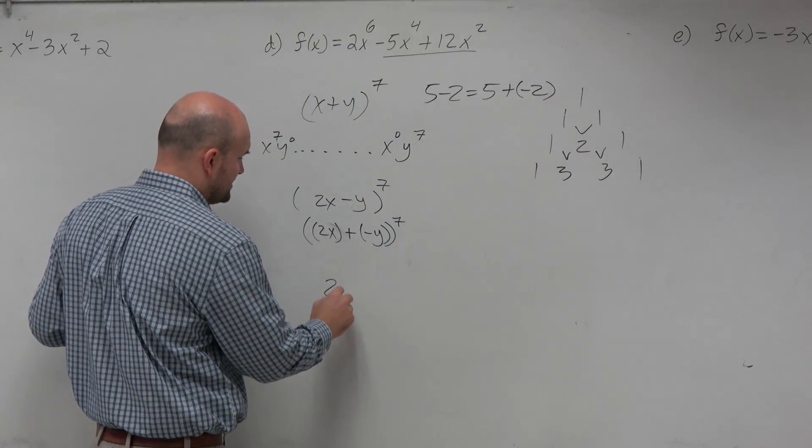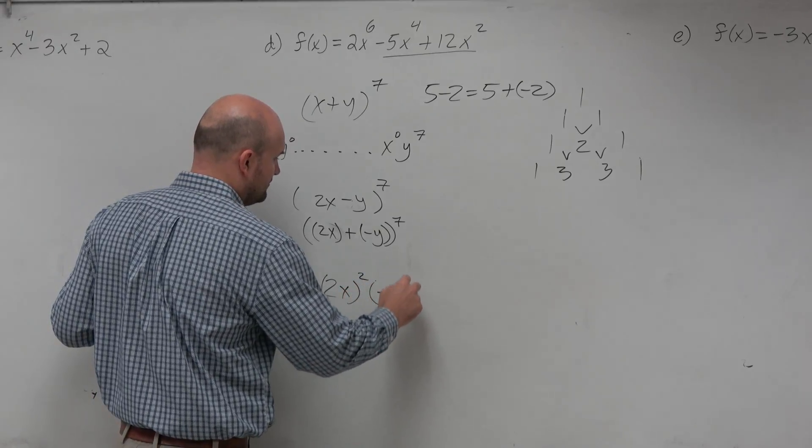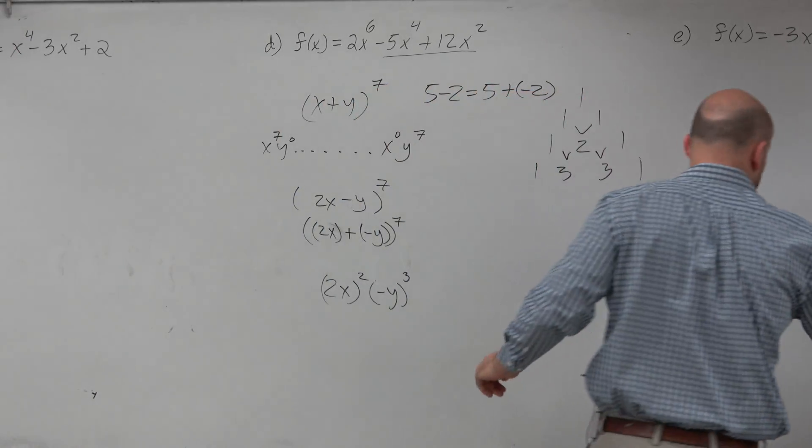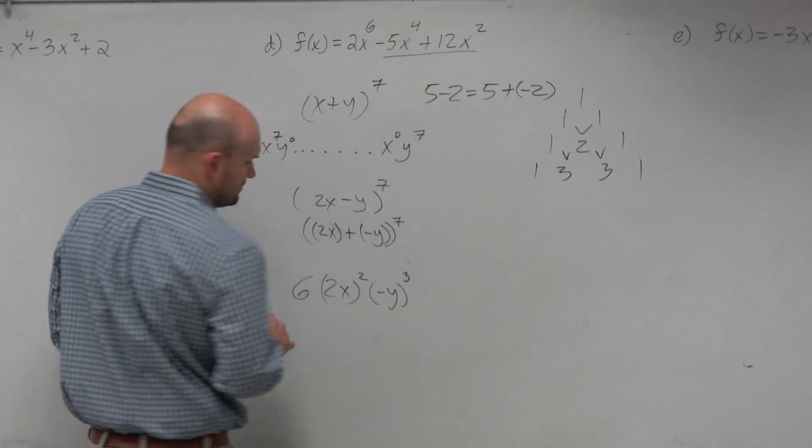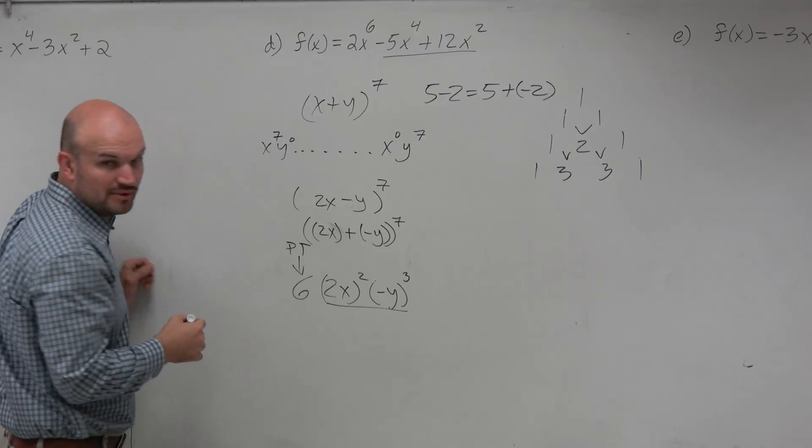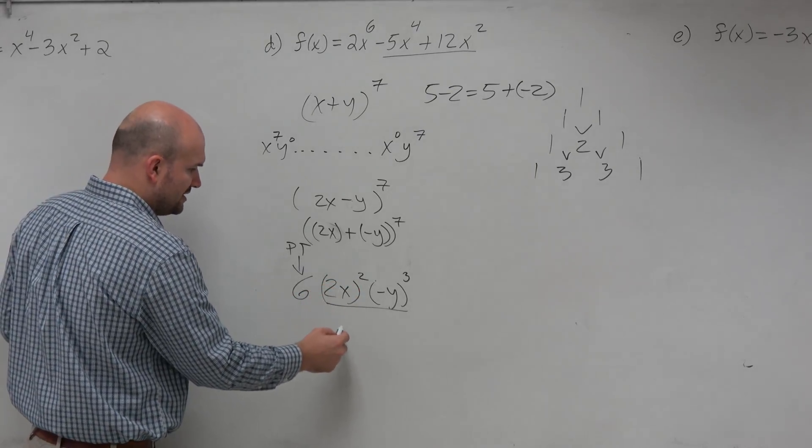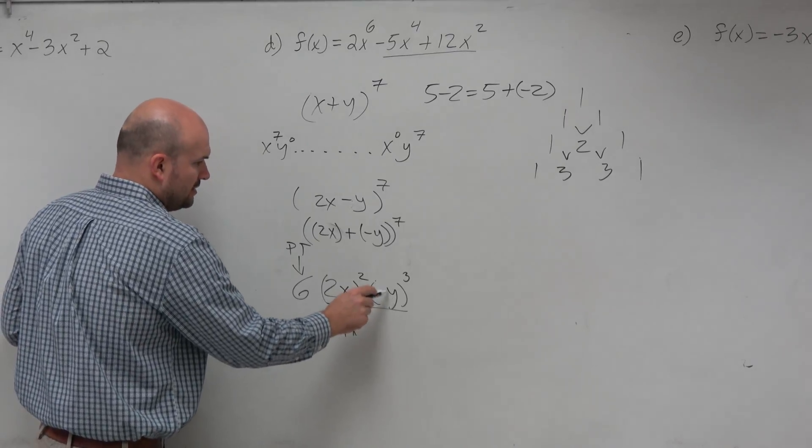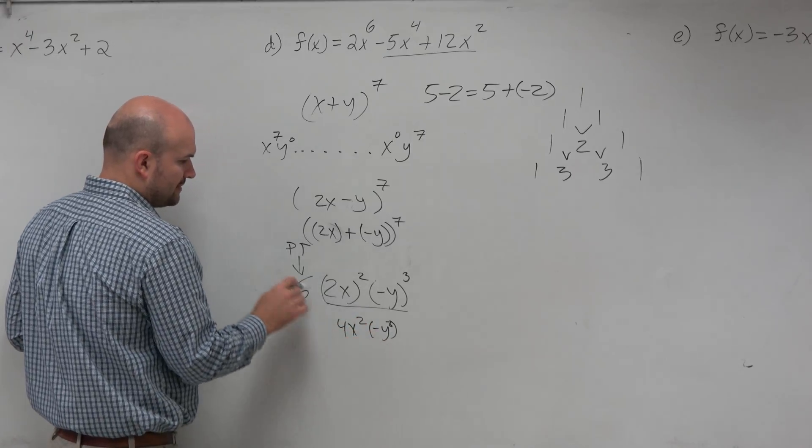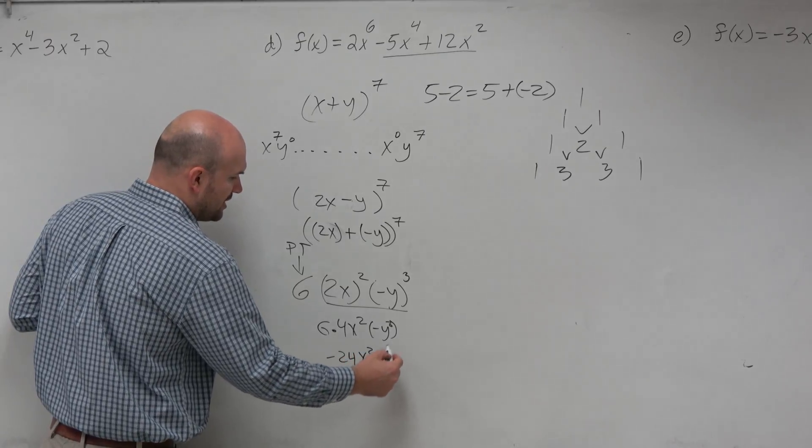Let's say one of the terms is 2x squared and negative y cubed, and let's just pretend that the coefficient here is 6. So here's from Pascal's triangle, and then here's from the binomial expansion terms. So you just do each one. 2x to the fourth is going to be 4x squared. Negative y cubed is going to be negative y cubed, and then times 6. And therefore, we'd have negative 24x squared y cubed.